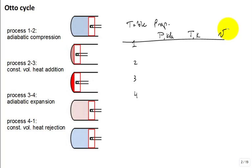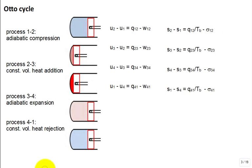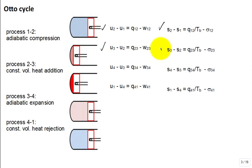Just the first law and the second law — we haven't gotten to the third law yet. This is what the first law looks like for each of the processes: one to two, then the second law for process one to two, then first law two to three, second law two to three, and so on for each process.